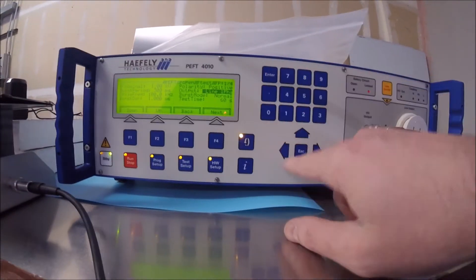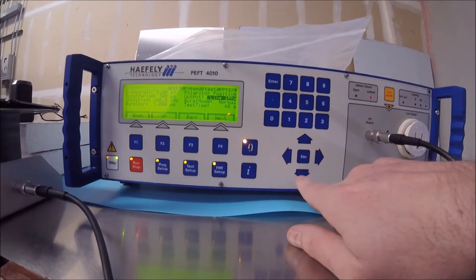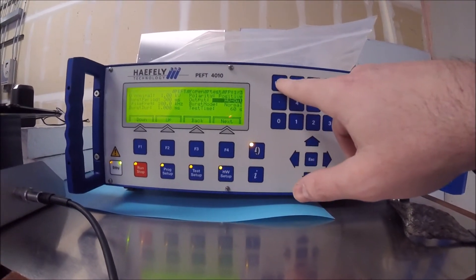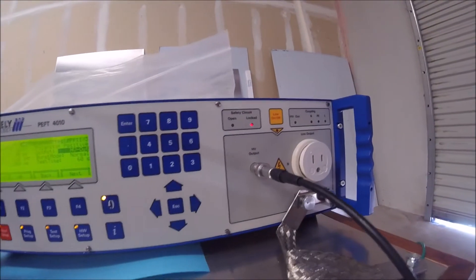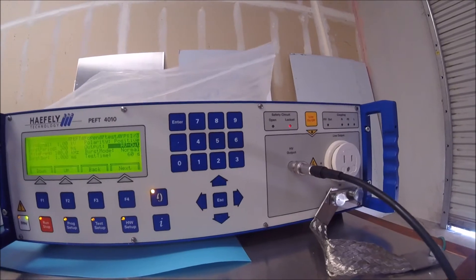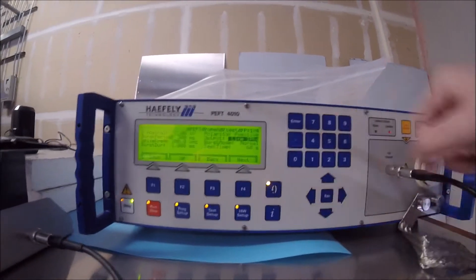Scroll over to output and change to HV output to use the CDN clamp. But since our epic DUT doesn't have any data lines, we will move back to a single phase output which is run through the internal CDN.